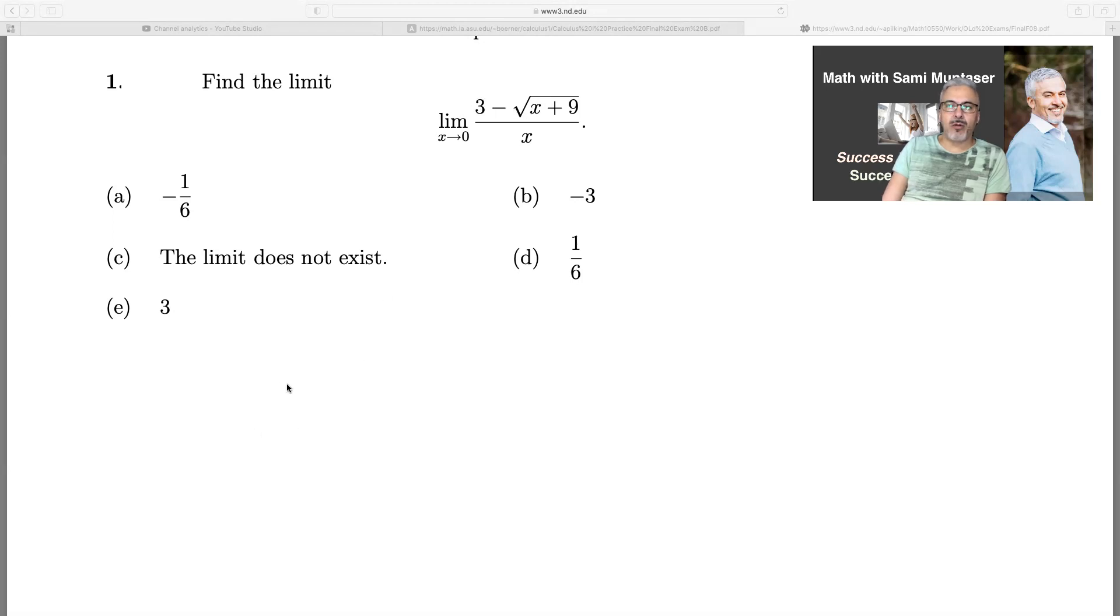So I'm going to go limit as x goes to zero, three minus square root of x plus nine all over x. So you multiply by the conjugate of the top, which is three and instead of minus you write plus and then x plus nine.